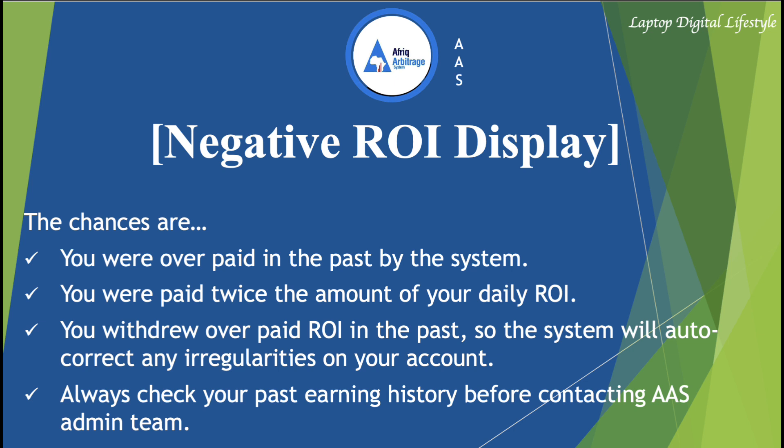The reason why your ROI might be negative is because you would have been paid twice in the past and you went to withdraw that money. You withdrew overpaid ROI in the past, so the system will auto-correct any irregularities on your account. Same thing as when you have zero ROI — the system must have paid you twice, and after a few days or maybe the next cycle, the system will realize that and auto-correct it.